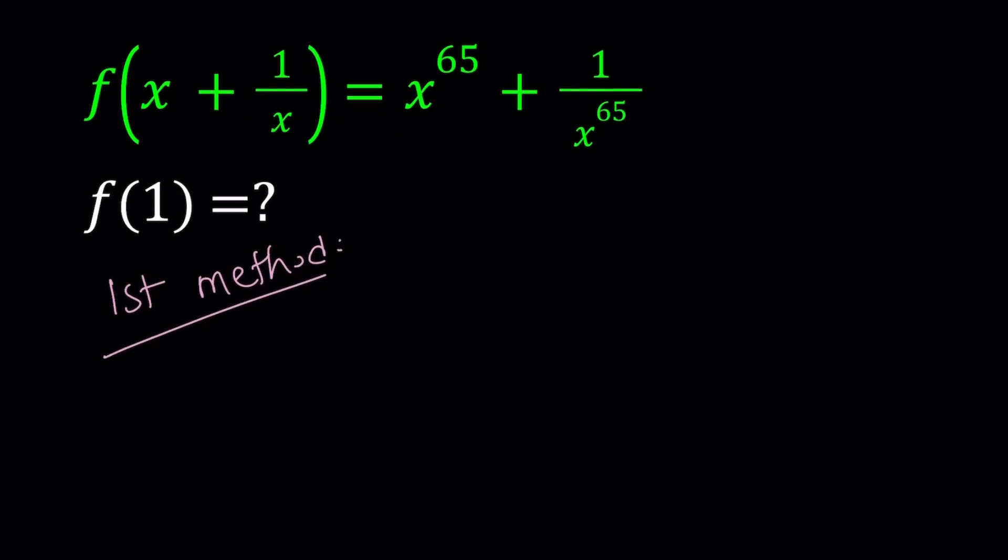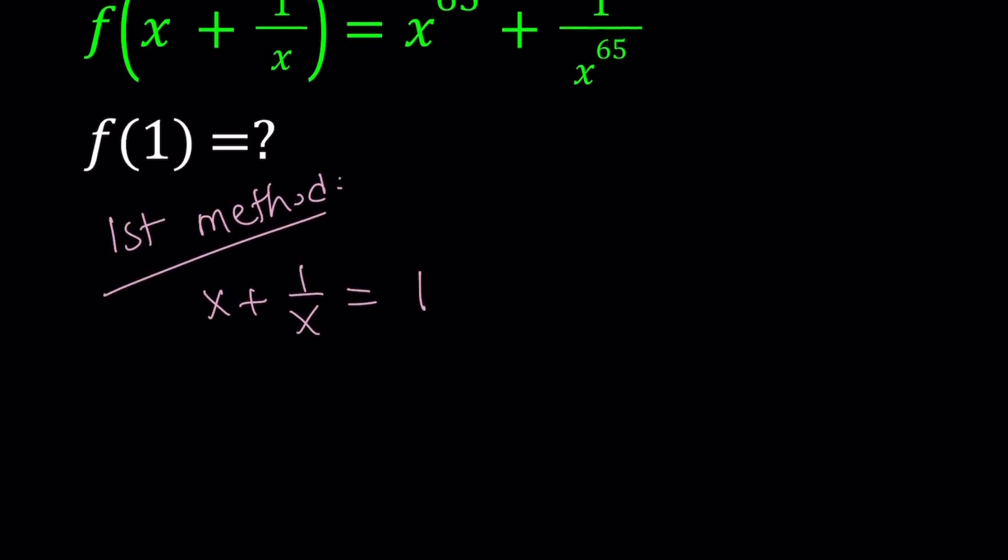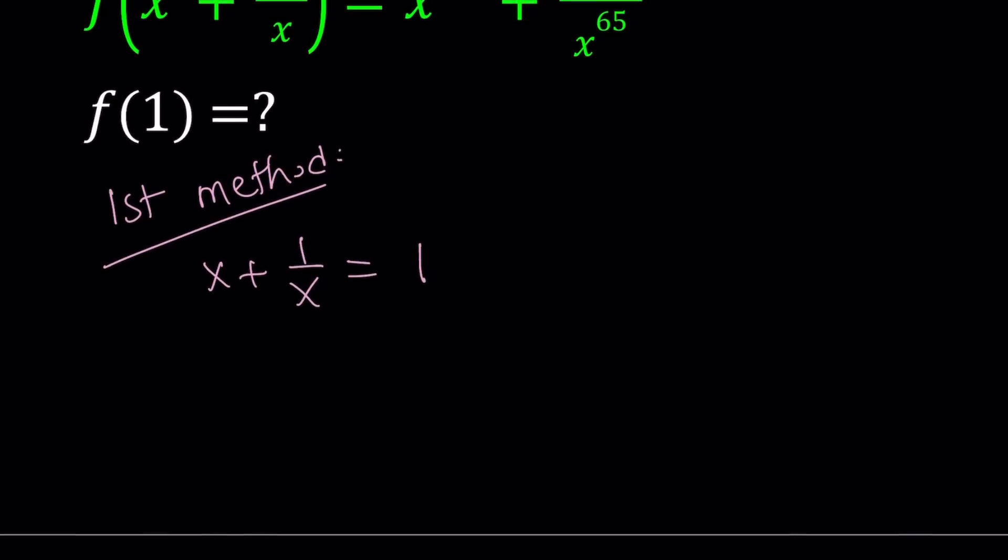So for my first method, I'm going to start by setting x plus 1 over x, and that should be the start of every method. We want to make what's inside the parentheses equal to 1. So it makes sense if we set it equal to 1, but then we'll proceed in different ways.